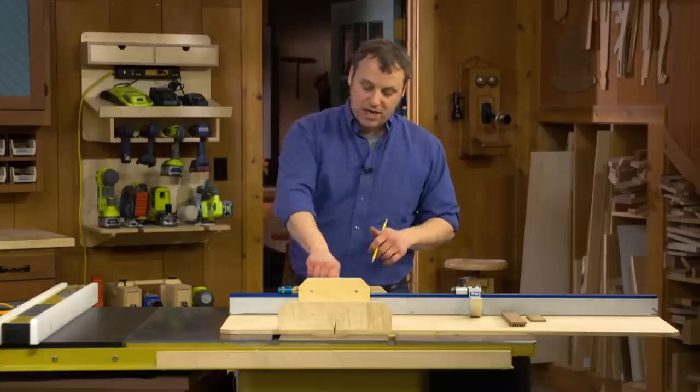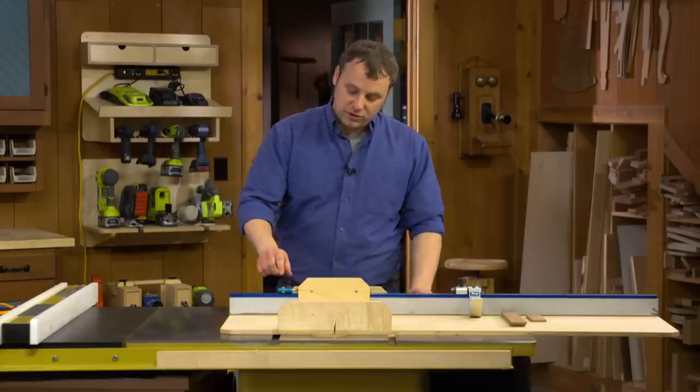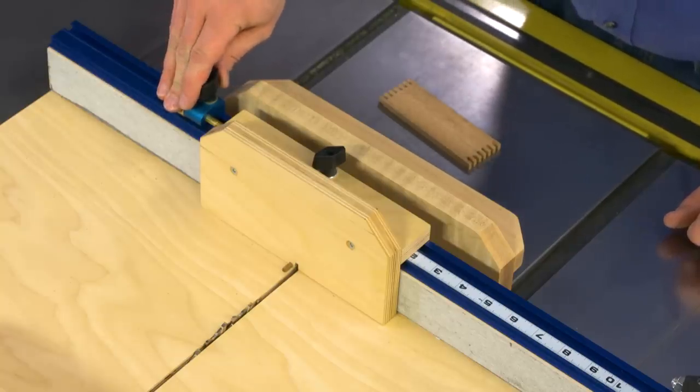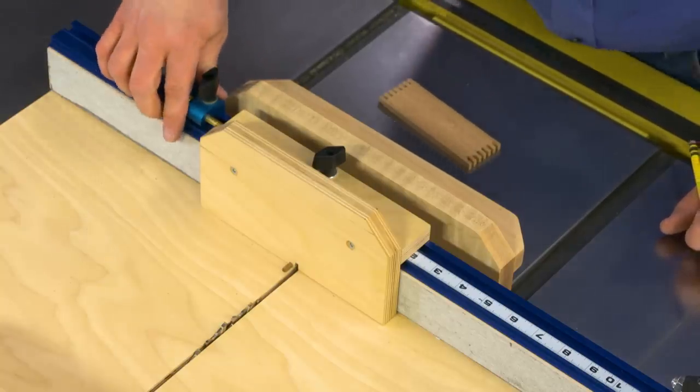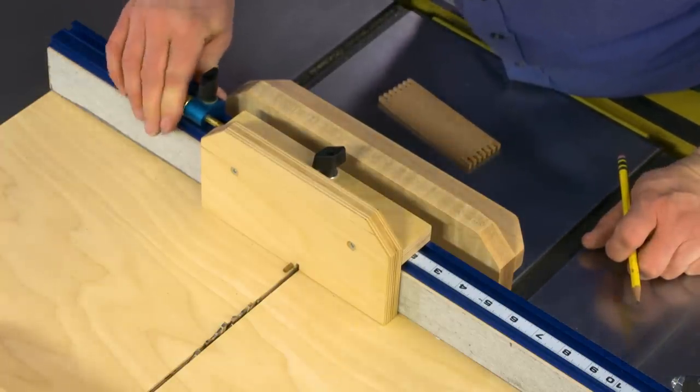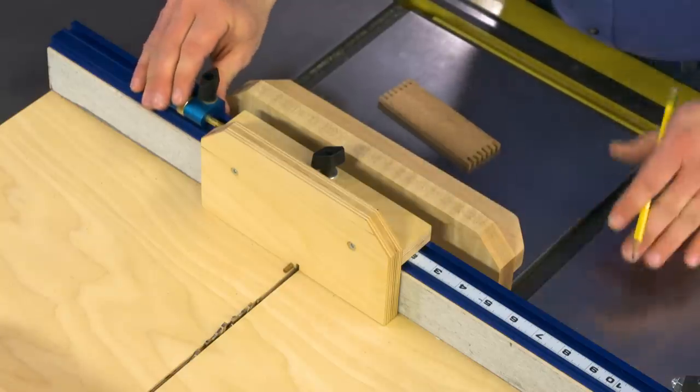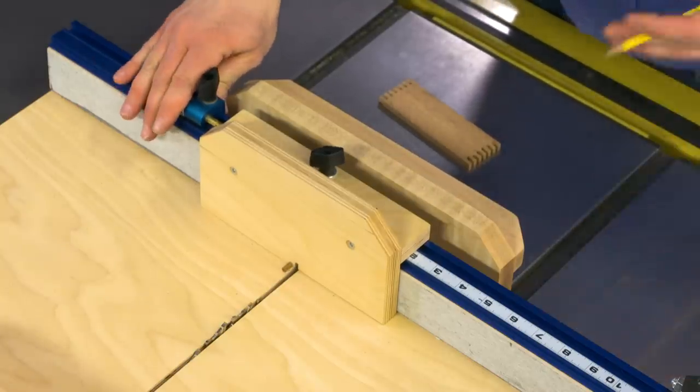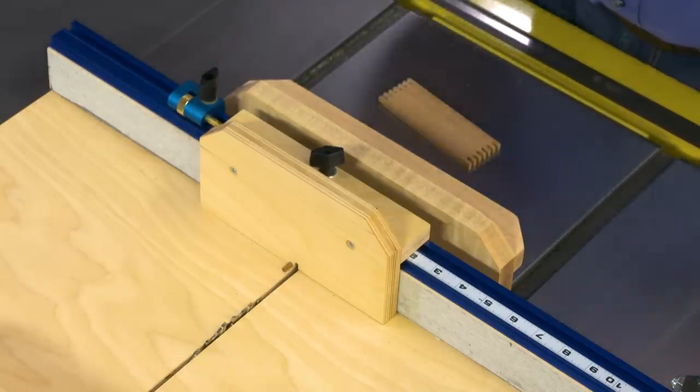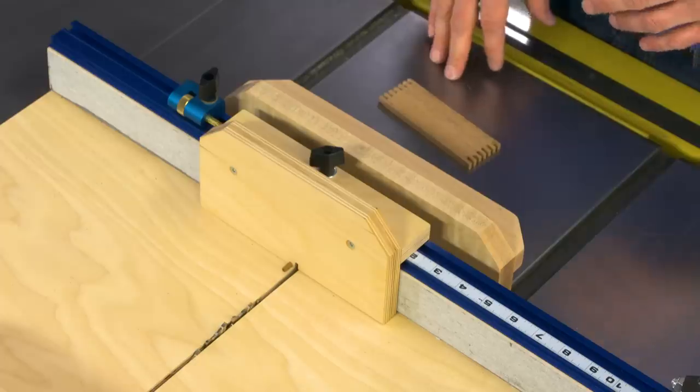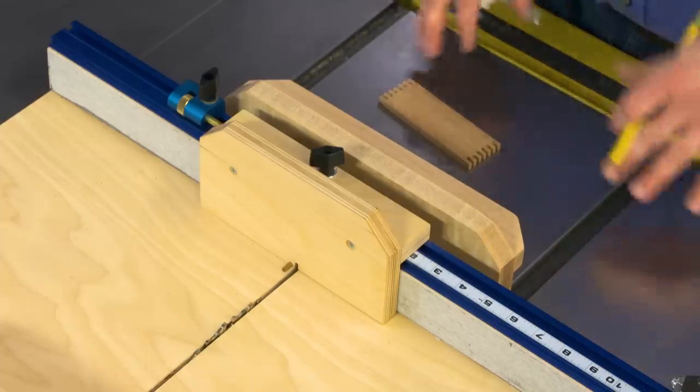In order to do that, this jig has a commercial micro-adjust feature built into it so that I can rotate this thumb wheel and move the key closer to or farther away from the blade in order to dial in a nice snug fit right from the saw, so there's no more messing around.